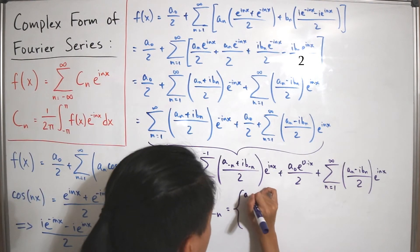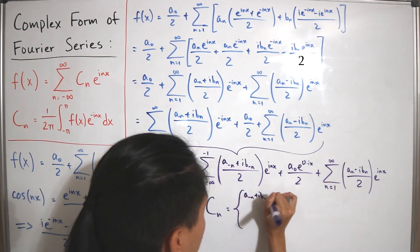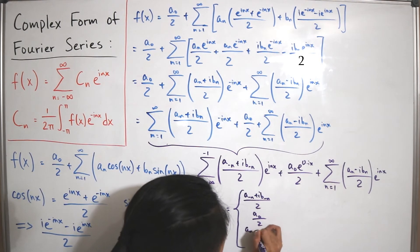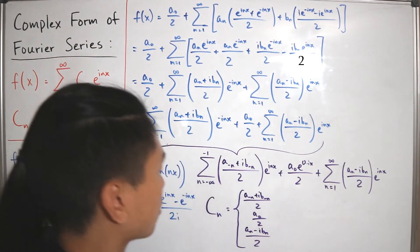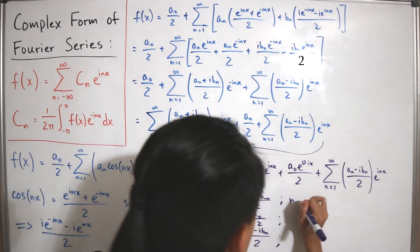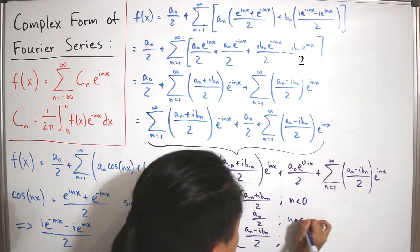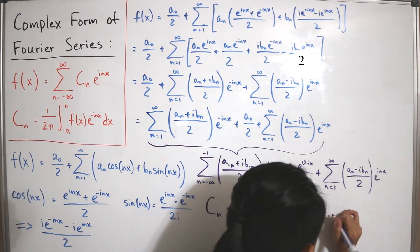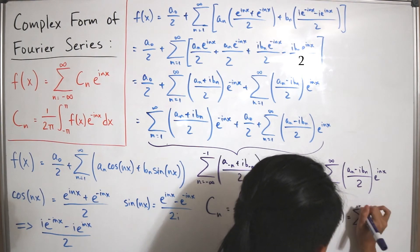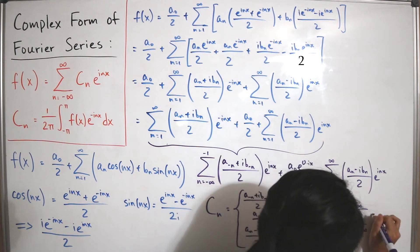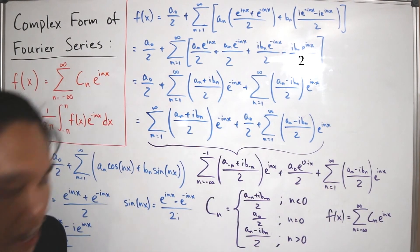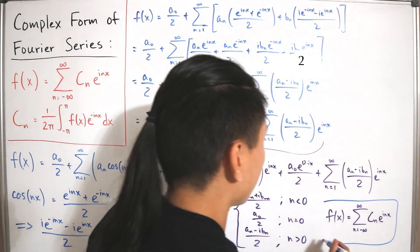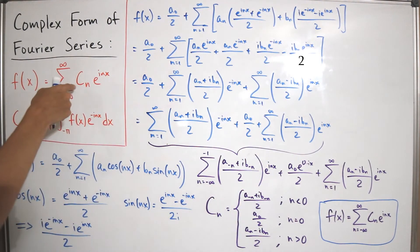The constant c sub n takes three values depending on the range. For n strictly less than zero: c sub n equals (a sub negative n plus i times b sub negative n) divided by 2. For n equals zero: c sub n equals a sub zero divided by 2. For n strictly greater than zero: c sub n equals (a sub n minus i times b sub n) divided by 2. Combining everything, f(x) equals the Laurent series from negative infinity to positive infinity of c sub n times e to the power i times n times x.